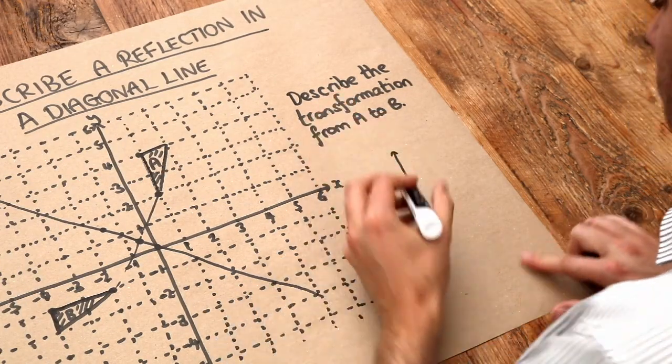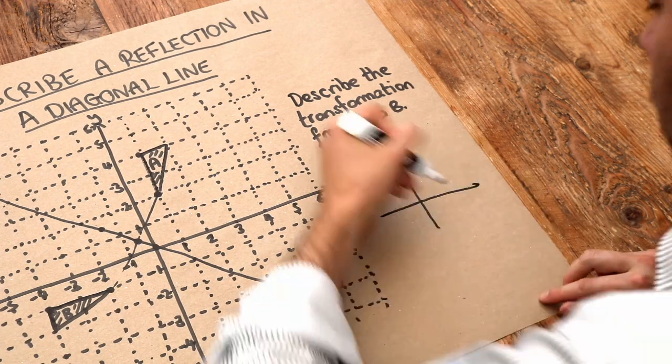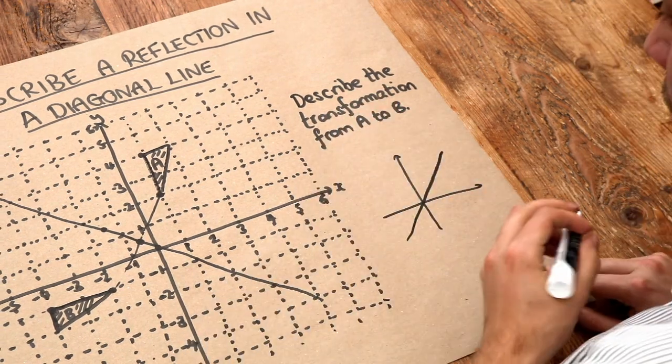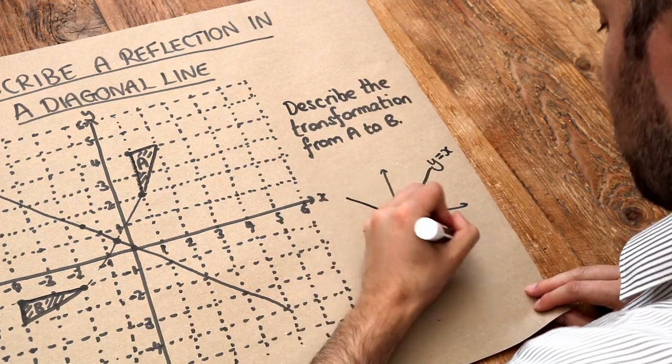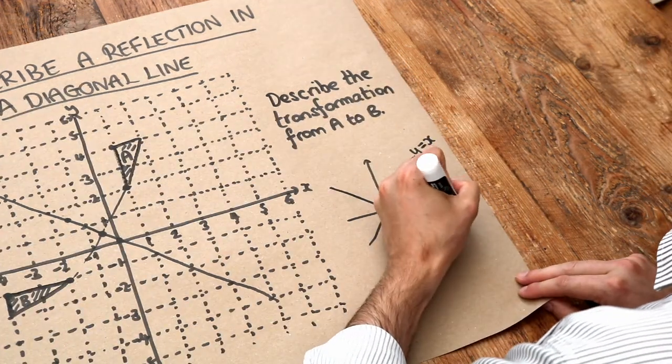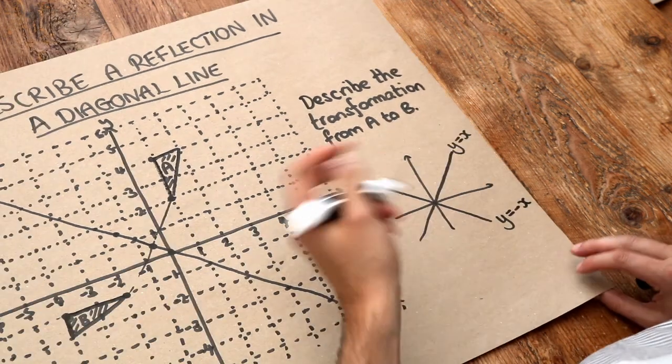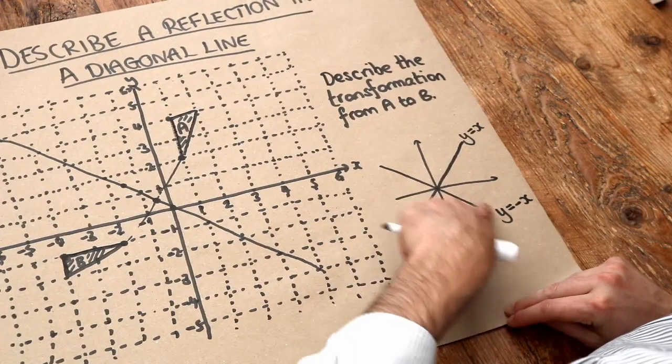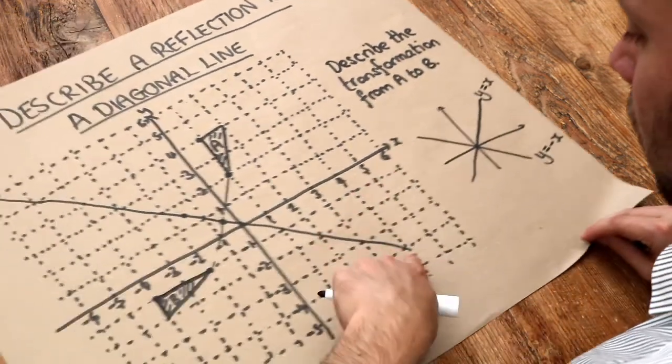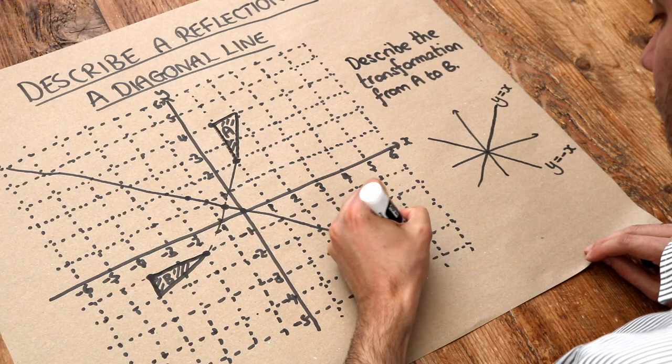Now there are two particular diagonal lines worth remembering by heart. If you have a diagonal line like this, it has equation Y equals X. And if you have a diagonal line like this, it has equation Y equals minus X. If you look at my videos on straight line graphs, you'll see why this is. Now we can see it's a line of this kind here, so this equation is Y equals minus X.